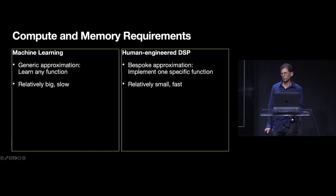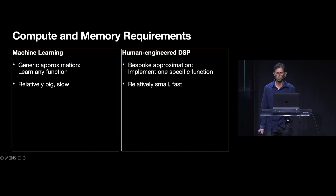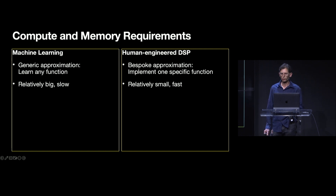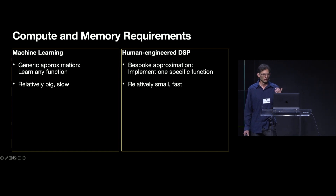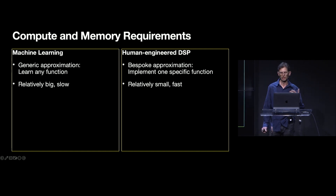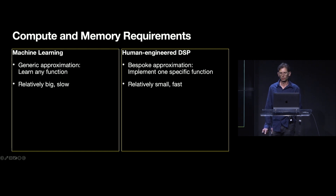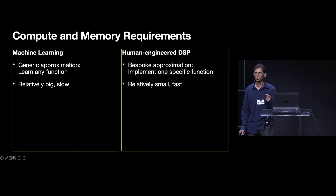Regarding compute and memory requirements, machine learning models typically require more compute resources. Machine learning models are universal approximators — they need to be able to learn any function from the training set and therefore need the capacity to represent any function. In contrast, a human-engineered DSP solution implements one specific bespoke function and bakes a priori knowledge and simplifying assumptions into the very structure of the code. So intuitively, any portion implemented with DSP can theoretically be more efficient than implementing the same portion with machine learning.